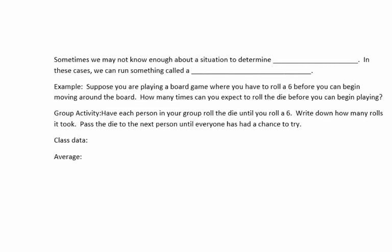So if you flip your page back over, sometimes we may not know enough about a situation to determine the probability. In other words, you just don't have enough information. For example, when you're rolling a die, you know there are six sides numbered one through six, so you can find the probability of rolling a three because it's one out of six. But sometimes you just might not have enough information. In these cases, we run something called a simulation.